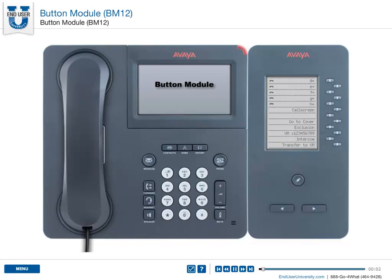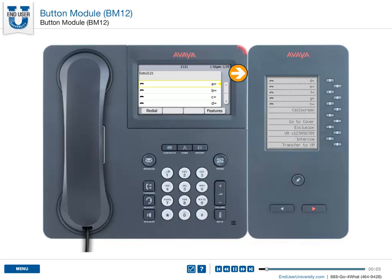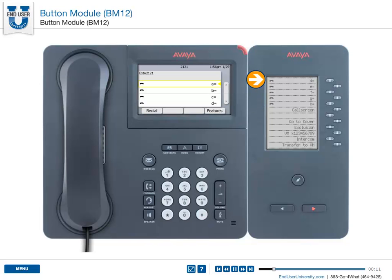Button Module. The optional BM-12 Button Module provides additional lines and bridge lines from one or more extensions. It can also provide abbreviated dialing buttons and buttons to access additional system features like call forwarding.